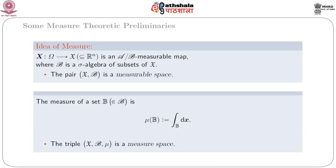Actually, it gives area, length, volume, etcetera. Then we get a triple like (script X, script beta, mu) and that triple is called a measure space.